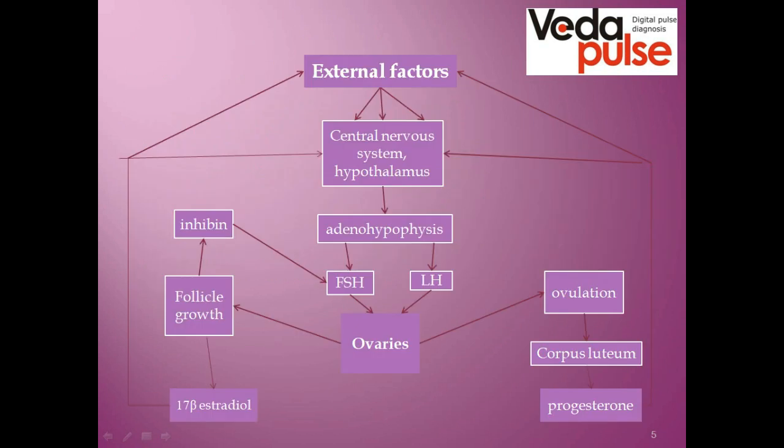Looking at the scheme, the hypothalamus, adenohypophysis, and ovaries not only react to direct signals sent to them but also give a feedback signal. For example, ovaries produce progesterone that influences the structure of the central nervous system. The hypothalamus produces releasing hormones that influence the pituitary, and then follicle-stimulating hormone influences the ovaries to produce estrogen, which stimulates follicle growth and maturation. These are the two hormones that work in the first phase of the cycle, called the follicular phase.